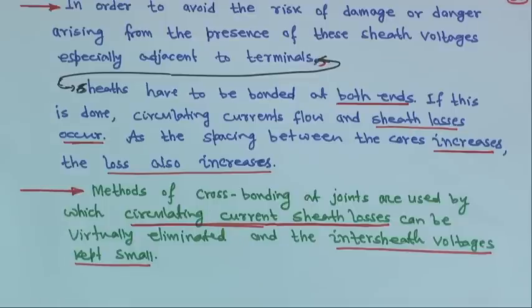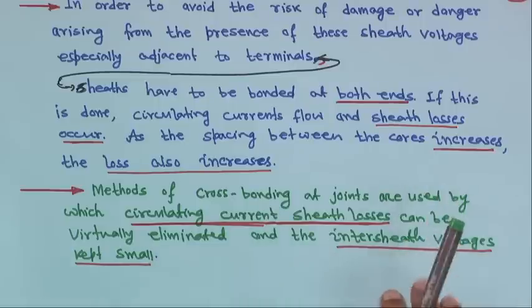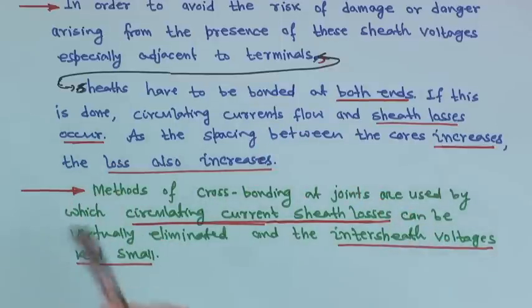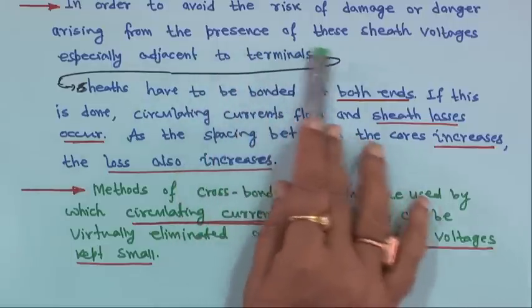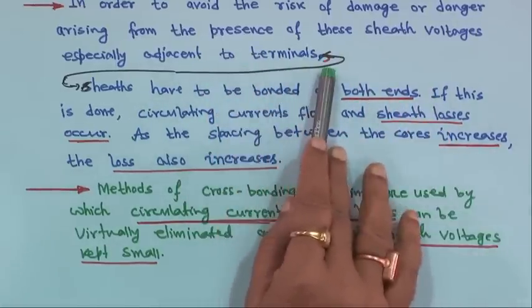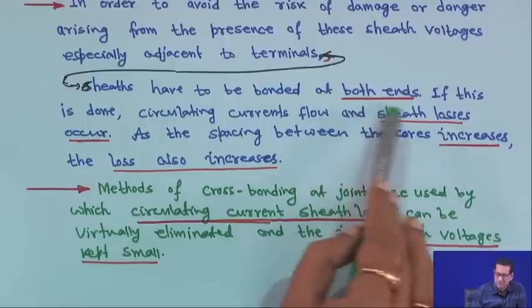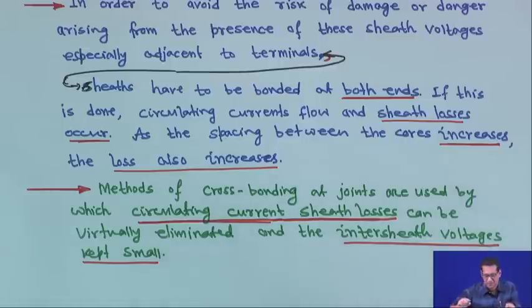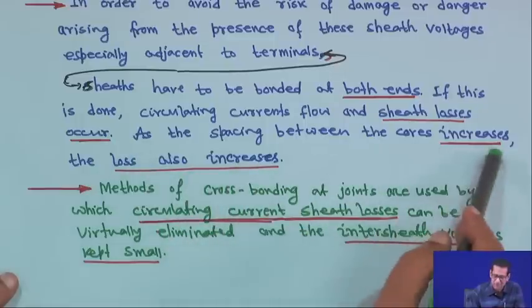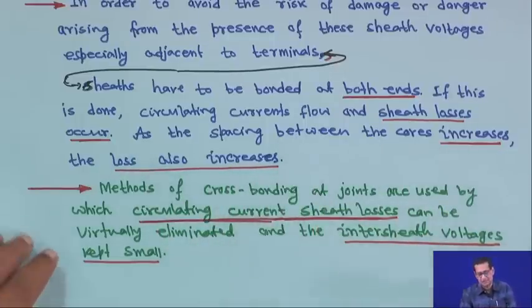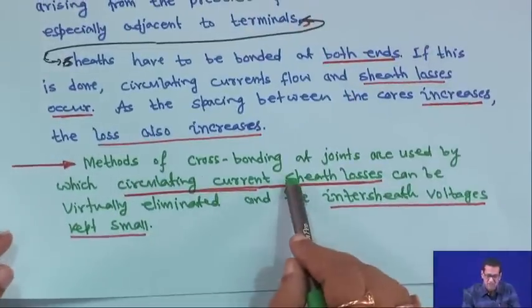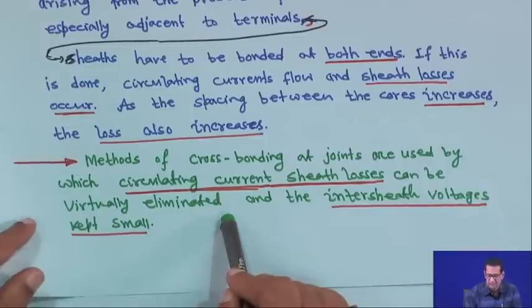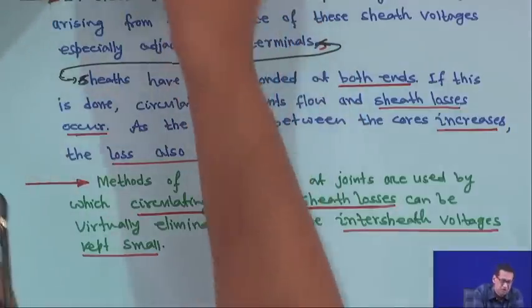By bonding at both ends, we are allowing the circulating current to flow. The sheath, like transmission line transpositions, has to be changed at regular intervals. In order to avoid the risk of damage from sheath voltages near terminals, sheaths have to be bonded at both ends. If this is done, circulating currents can flow and sheath losses occur, but as the spacing between cores increases, the loss also increases. Methods of cross-bonding at joints are used by which circulating current sheath losses can be virtually eliminated and the inter-sheath voltages kept small.